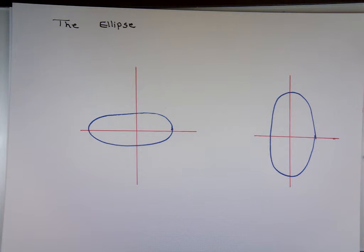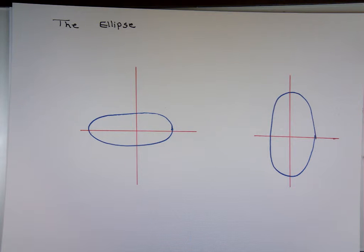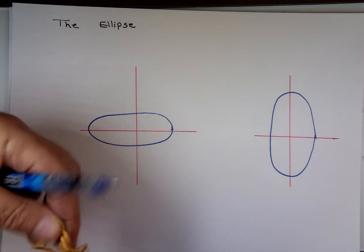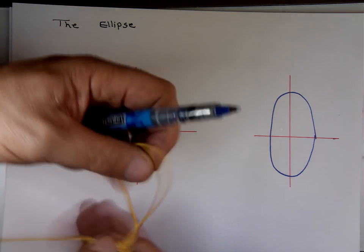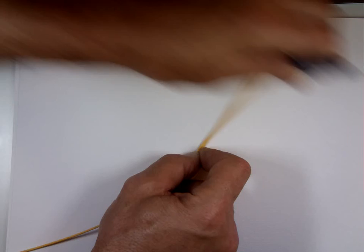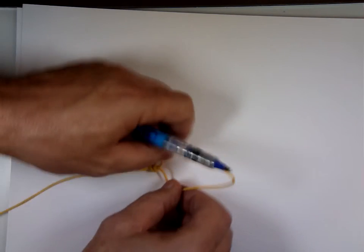If you actually want to graph an ellipse, you take a string — I've done that on the big board. You take a string like this, tie a knot in it. If you hold this down and attach it to your graph, you have a circle.